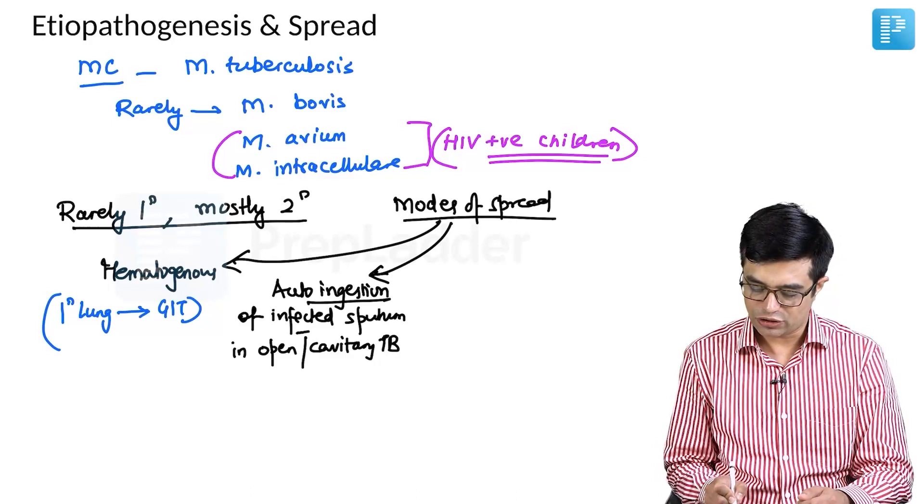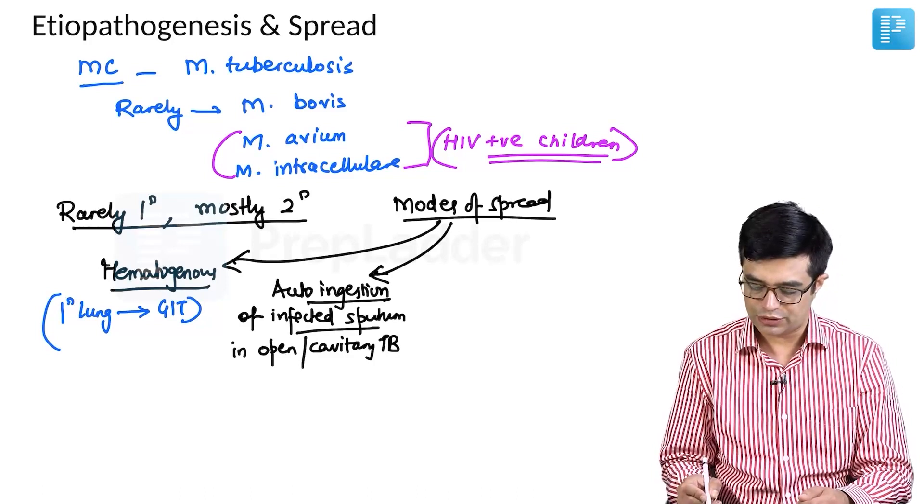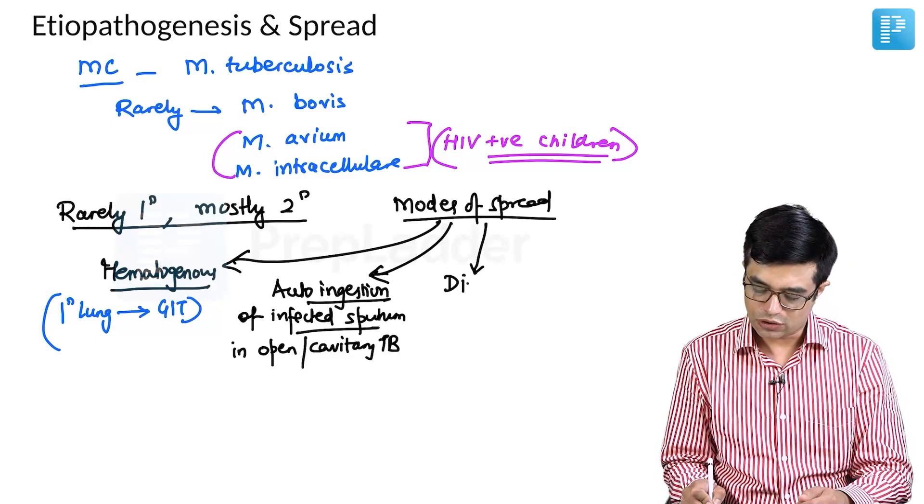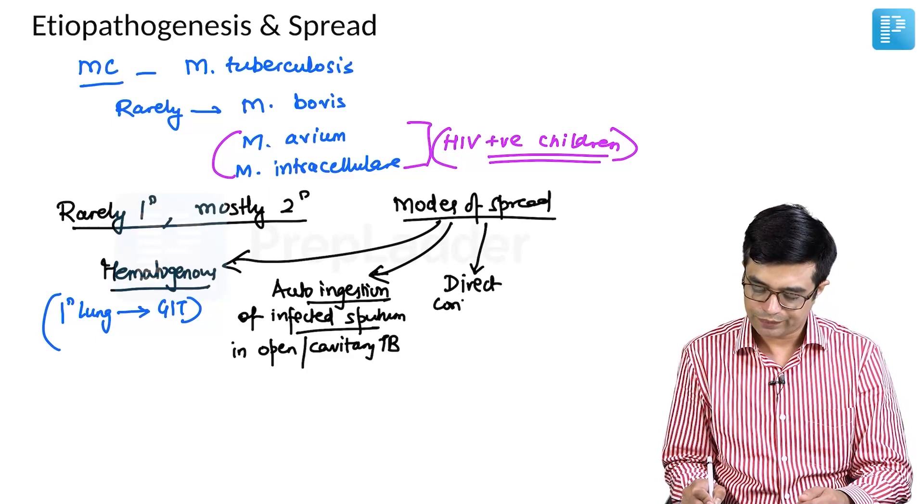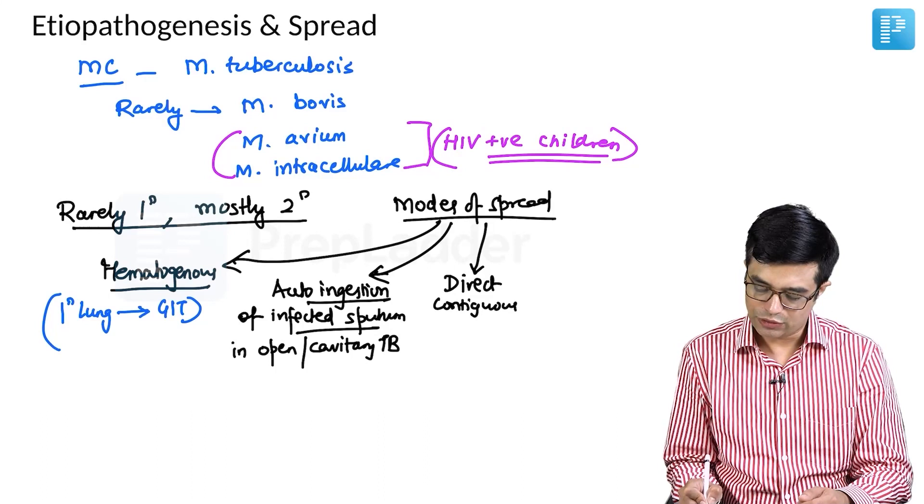So, the second is autodigestion of infected sputum. First was hematogenous. Thirdly, it can occur through direct contiguous spread.